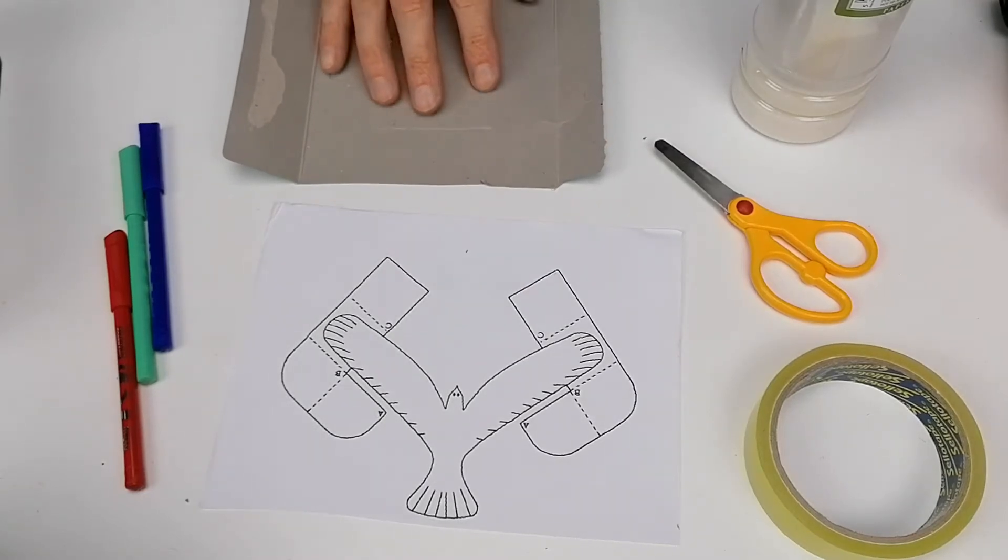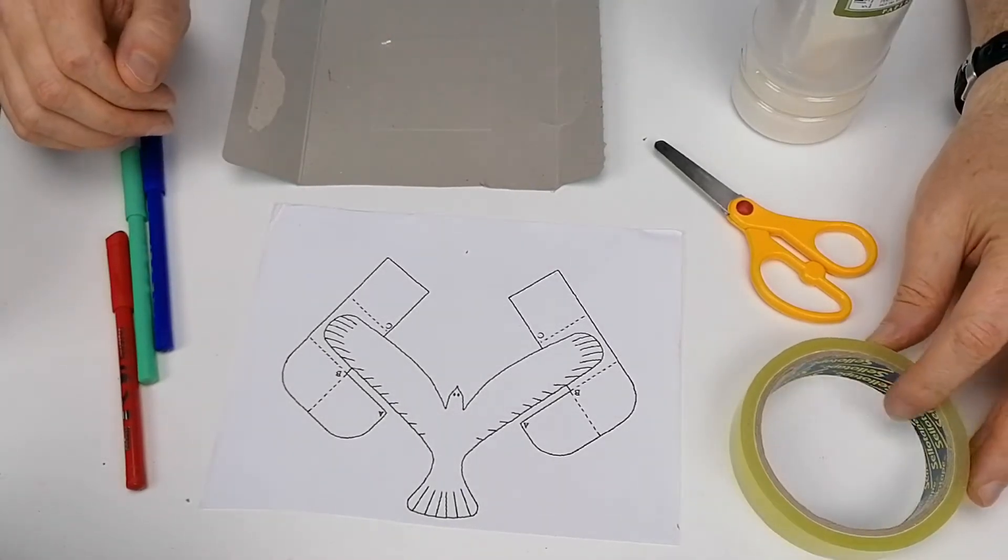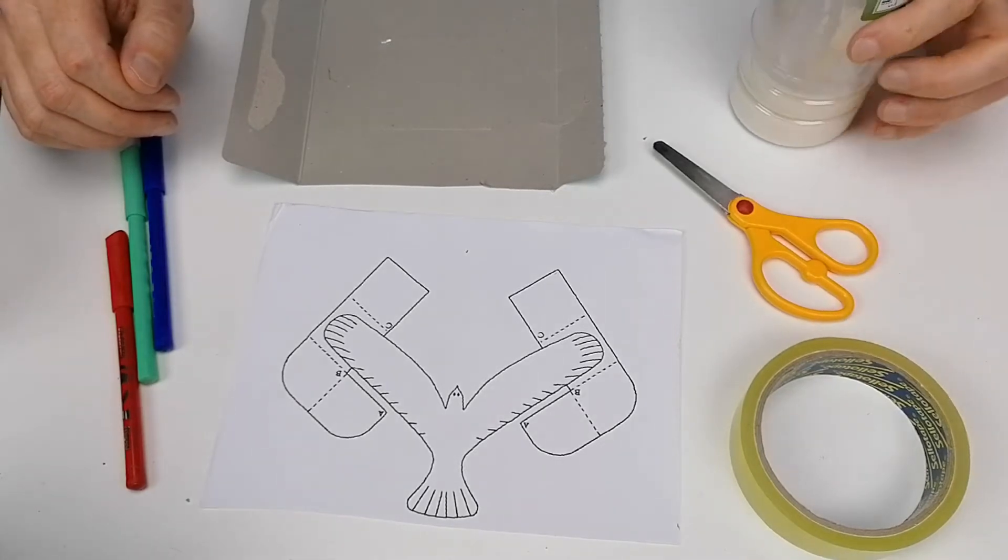We need a little bit of card, in this case it's a cereal box, you're going to need some colors because I'm going to color it up, a little bit of sellotape, scissors and some glue.